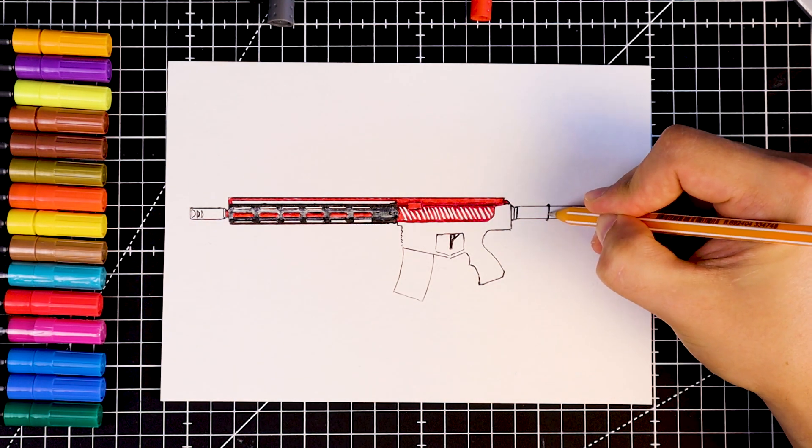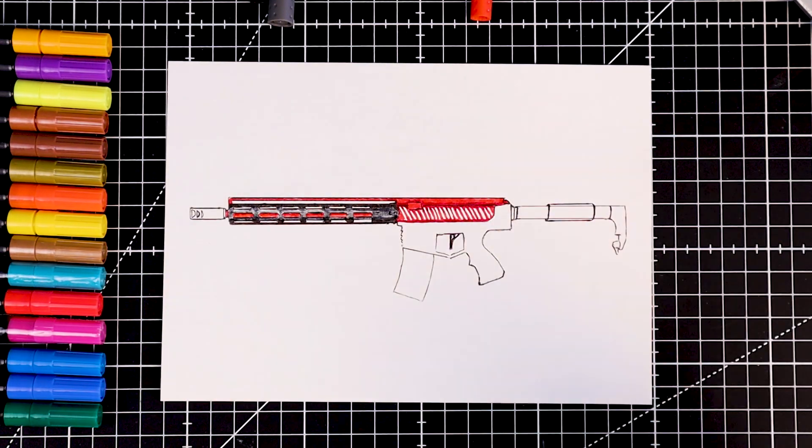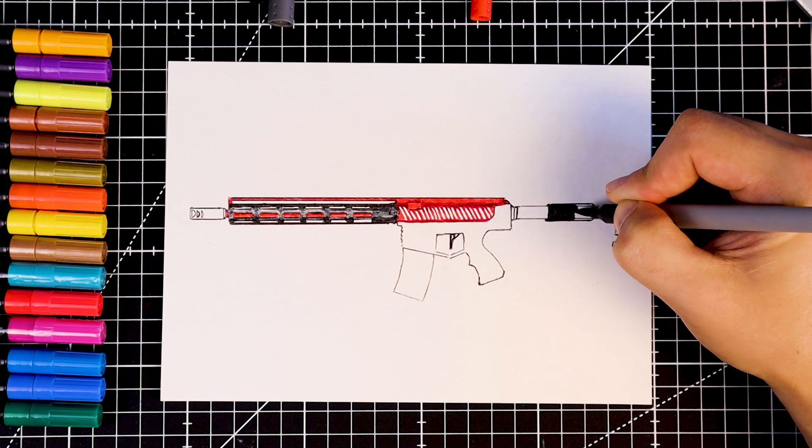This part will be the cheek rest. The cheek rest is soft and matte, not shiny or metallic. So we can fill it in with thick black colour, instead of trying to make it shiny.